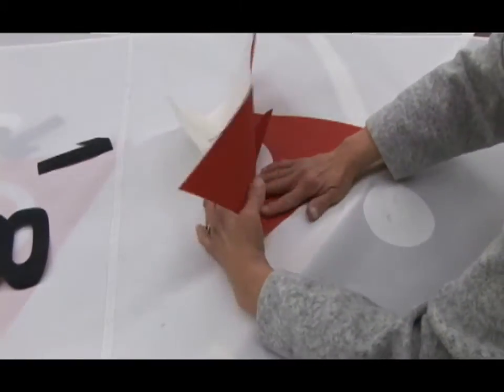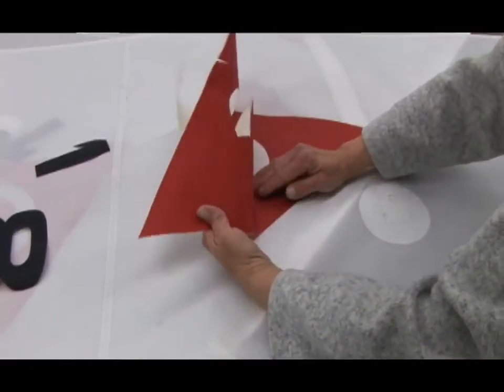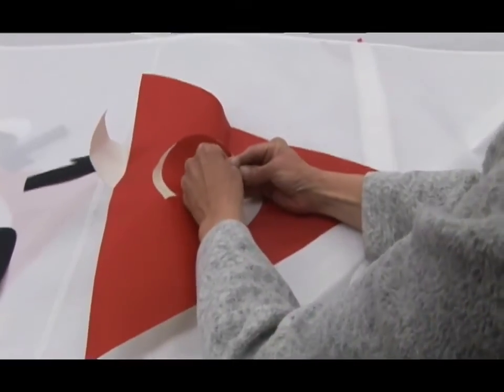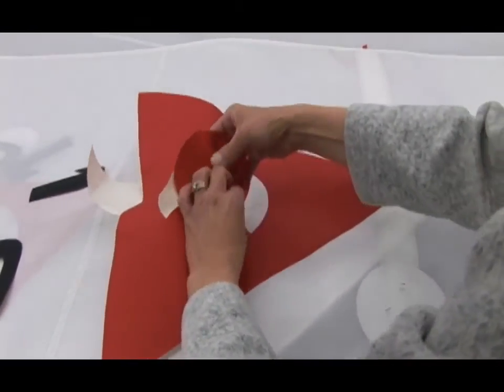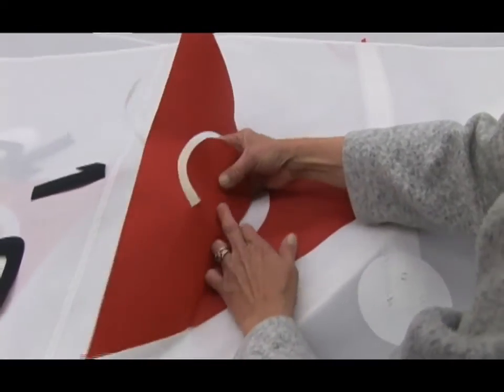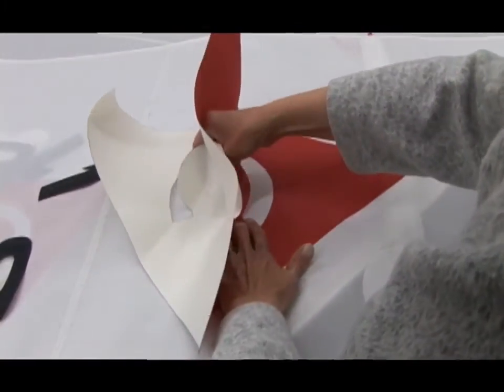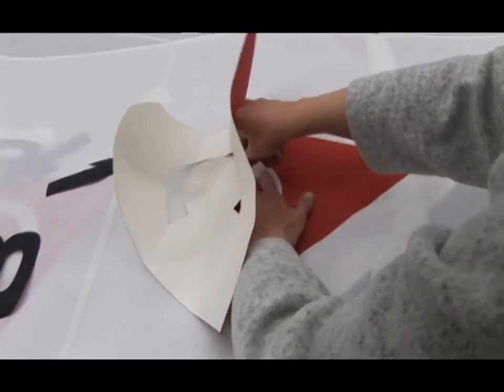One nice thing about this Insignia material is that it can be reapplied. It does get a little bit sticky over time, but when you're initially installing the Insignia adhesive on the sail, you can actually peel it off and reapply it if you get a wrinkle in it.